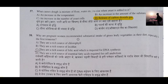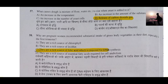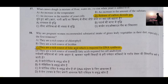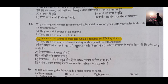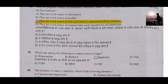Question number 58: Why are pregnant women recommended substantial intake of green leafy vegetables in their diet, especially in the first trimester? In the first three months, they are advised to eat more leafy vegetables because leafy vegetables are a rich source of folic acid, which is required for DNA synthesis of the fetus in the womb.